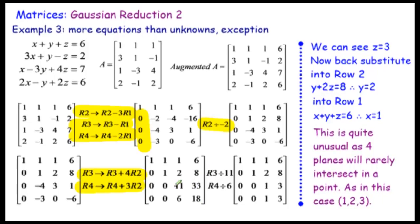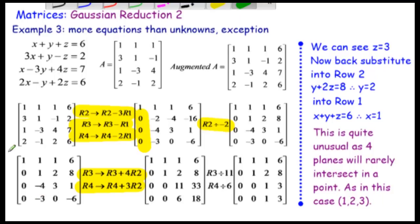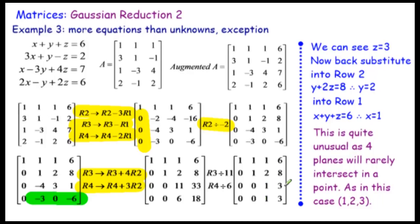We end up getting 11z equals 33 and 6z equals 18, which reduces to z equals 3. Going back to back-substitute: minus 3y equals negative 6, so y equals 2 — I could actually pick that out because a zero occurred there. But often that doesn't happen and you have to keep going. We get z equals 3, back-substitute to get y equals 2, then back-substitute into row 1 to get x equals 1.